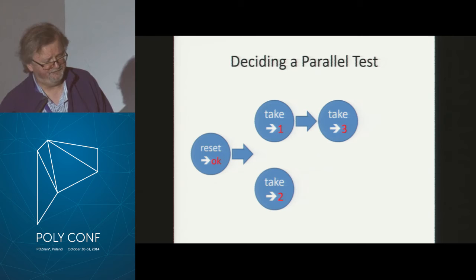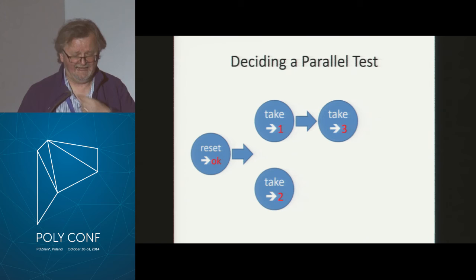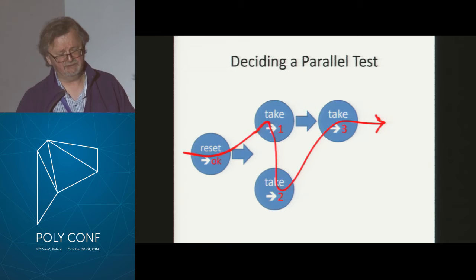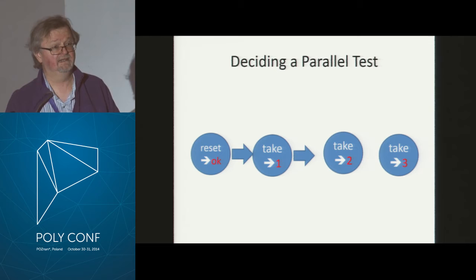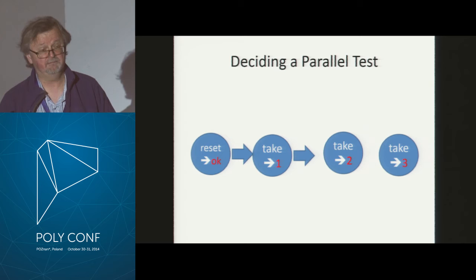Here's how we do it. We claim a test is correct if there is some sequential order in which we could have performed those calls that would make the results match our sequential model. We generate and run parallel tests, and for each test we ask: could we have arranged these in a sequential order and got something that matched the model?